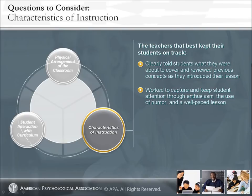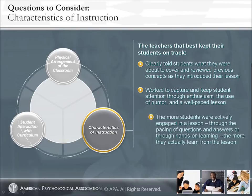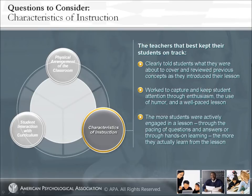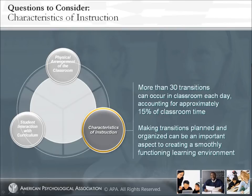Among the most important discoveries from this research was that the more students were actively engaged in a lesson — through the pacing of questions and answers or through hands-on learning — the more they actually learned. Studies have shown that more than 30 transitions can occur in a day in a classroom, accounting for approximately 15% of classroom time. Making transitions planned and organized can be an important aspect of creating a smoothly functioning learning environment.